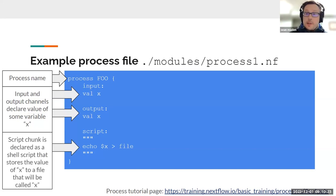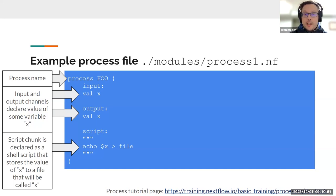The process called 'foo' has its definition inside curly braces. We start with the input channel, which comprises the value of some variable stream x, and then the output, which is also some variable stream x. The Nextflow workflow comprises processes that perform a task — the script chunk, where it says 'script' followed by quotes, defines what that task actually is. Everything up to this point is process metadata and definition, but the script chunk is the actual task definition — what we're actually doing with the variable stream.